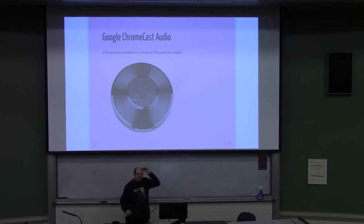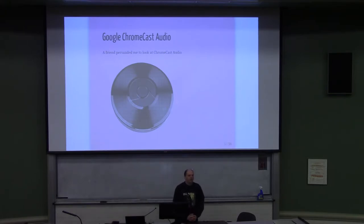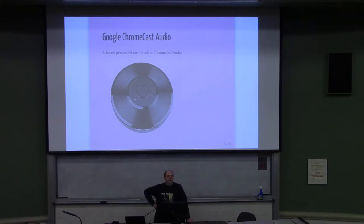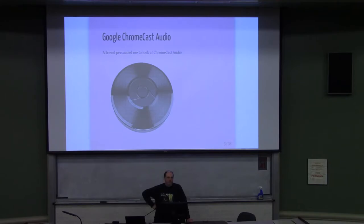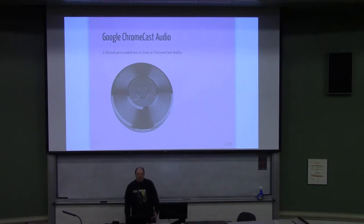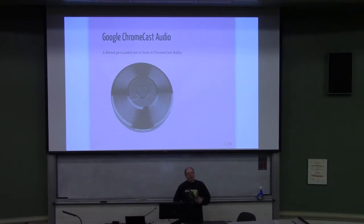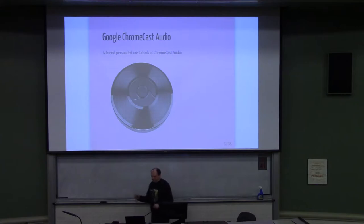Someone noted that Chromecasts were also interfering with Wi-Fi routers. When you set them up, they create an ad-hoc network that you have to connect to in order to configure them. I'm not thrilled with unmonitored ad-hoc networks in my space. But they were designed so that someone who doesn't understand what they're doing can fire up Google Home and configure them — so trade-off.